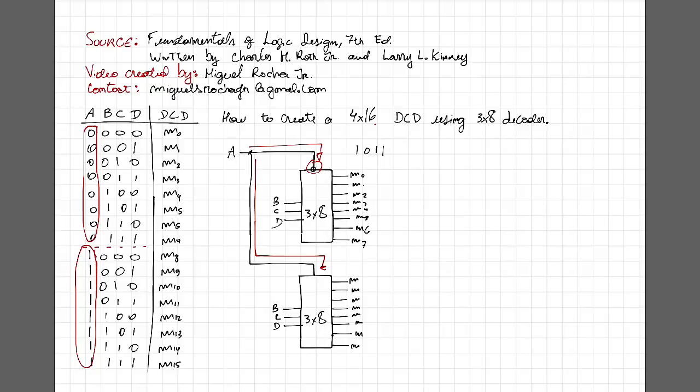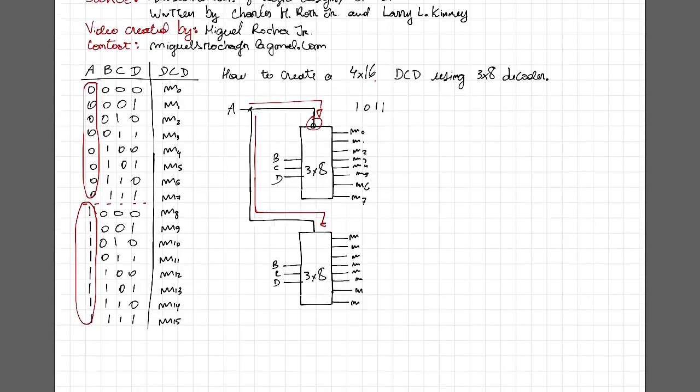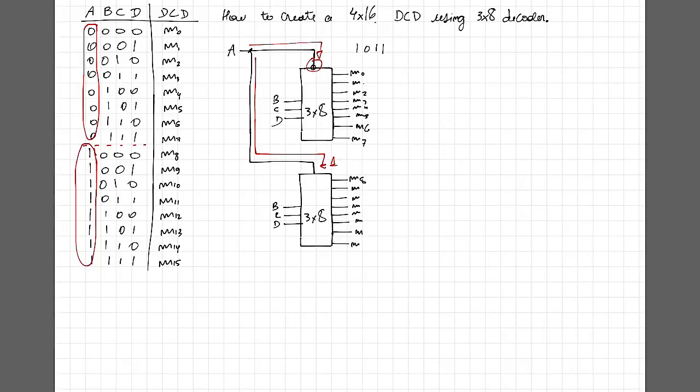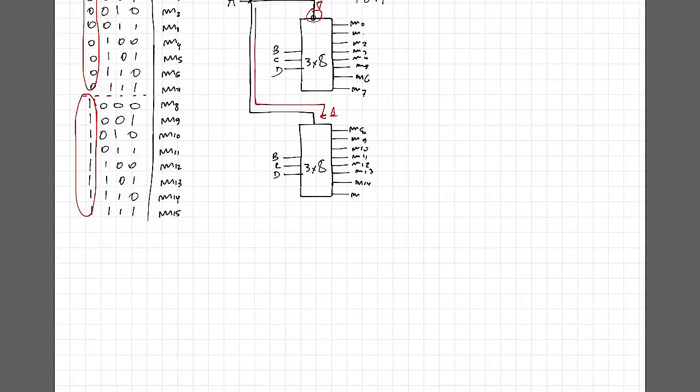The same A equal to one is going to be inputted into the second decoder, making for this specific input combination the first one inactive and the second one active. If you look to the truth table and apply all the values on both of the decoders with this specific design, you're going to realize that you will end up having all the possible 16 combinations for our 4x16 decoder.